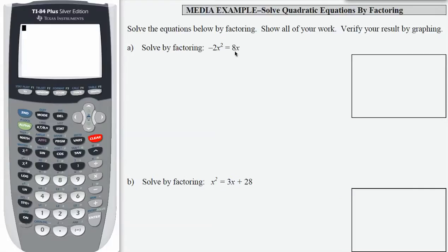The first step to solve by factoring is to write the equation in standard form. That means to set it equal to 0. So I'm going to subtract 8x from both sides, leaving me equal to 0 on the right hand side.